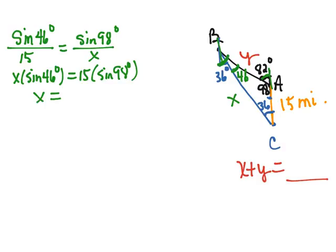So if we divide both sides by the sine of 46, 15 times the sine of 98 divided by the sine of 46 gives us 20.650 miles is that distance.